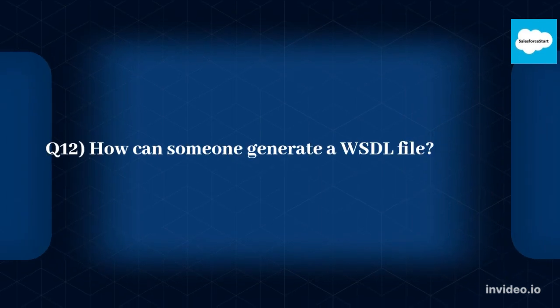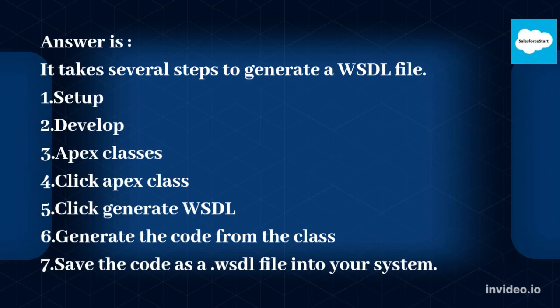Q12: How can someone generate a WSDL file? It takes several steps to generate a WSDL file: 1. Setup, 2. Develop, 3. Apex Classes, 4. Click Apex Class, 5. Click Generate WSDL, 6. Generate the code from the class, 7. Save the code as a WSDL file into your system.